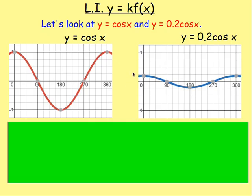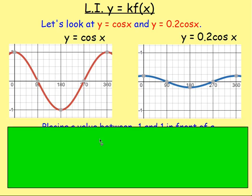Let's look at cos x and y equals 0.2 cos x. Again, thinking about the graph, you can tell how they are different just by looking at them. You can see that this graph here is going between 1 and negative 1. This one here is going between 0.2 and negative 0.2. So this one has not been stretched, it's been compressed.